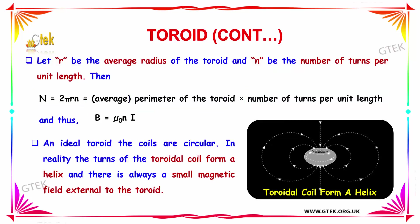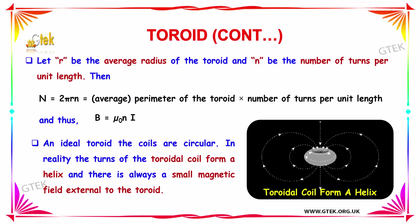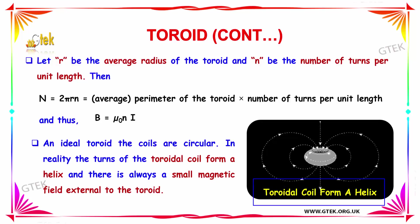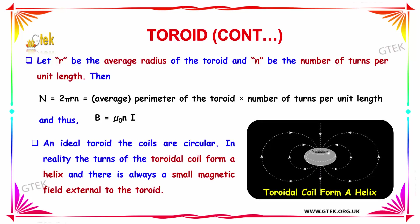An ideal toroid assumes the coils are circular. In reality, the turns of the toroidal coil form a helix, and there is always a small magnetic field external to the toroid, as can be seen here.